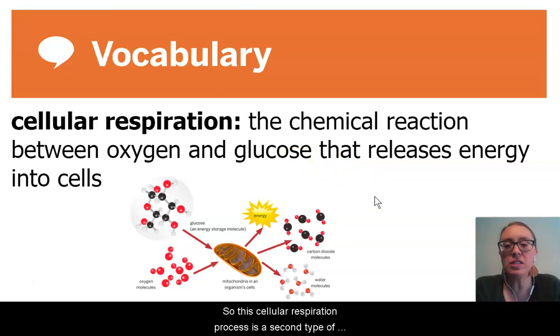This cellular respiration process is a second type of chemical reaction in this unit that we've discovered occurs within cells. Photosynthesis was that first type. In chapter one, when we were looking at photosynthesis, we realized that the amount of sunlight, along with the amount of carbon dioxide available and the amount of water available, can really determine how much energy storage molecules are produced from that process of photosynthesis.